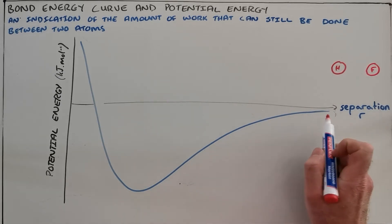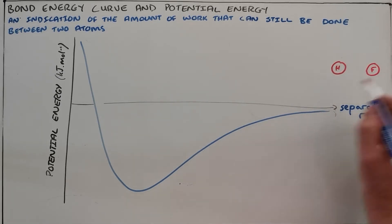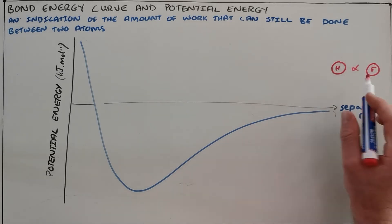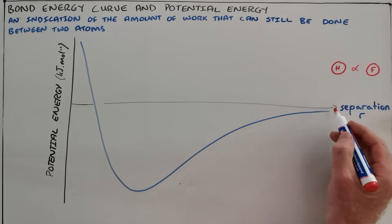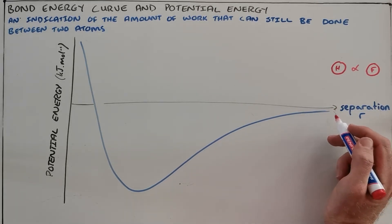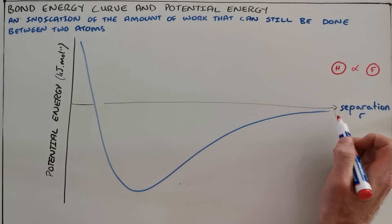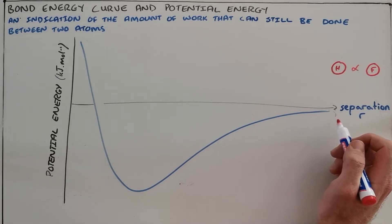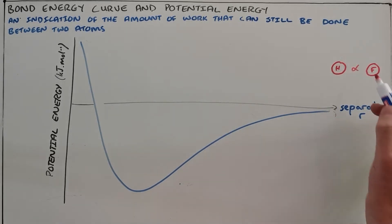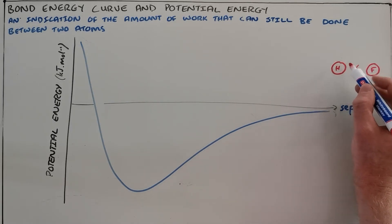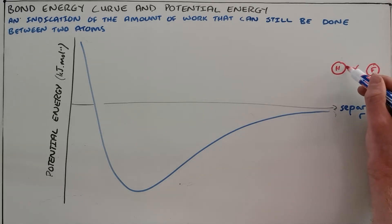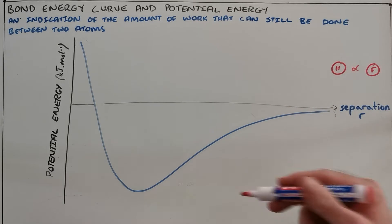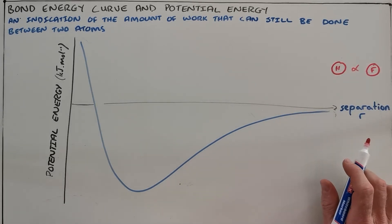This axis extends infinitely to the right, and at an infinite distance between these two atoms the potential energy between them is zero or very close to zero. That is because the only way these two atoms can interact is with an electrostatic force of attraction between the nucleus of one atom and the electrons of the other, and as the distance gets further, that electrostatic force gets smaller.